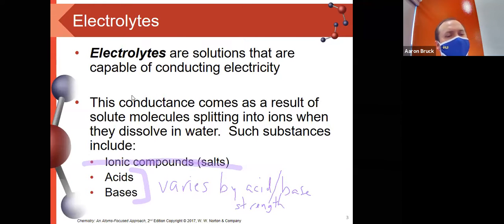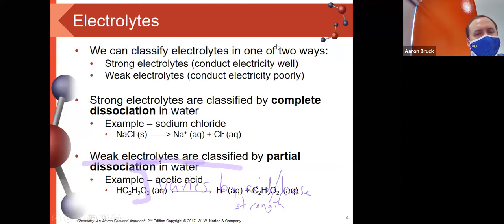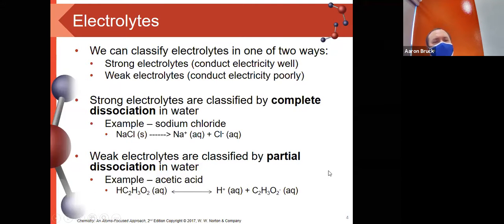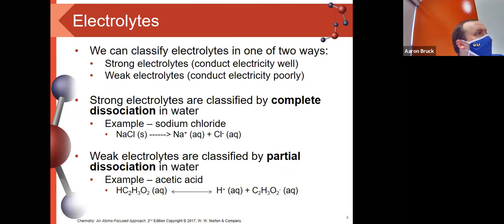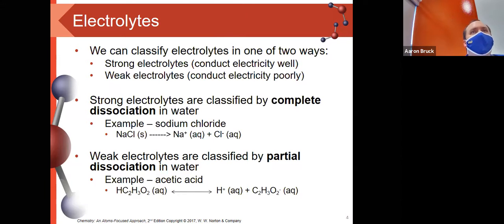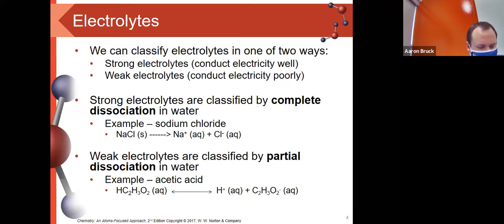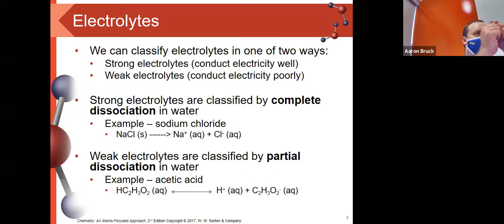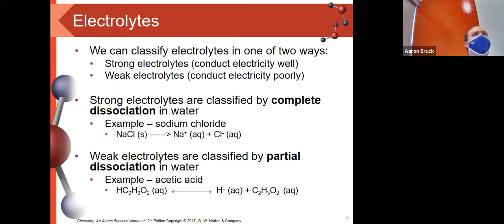For electrolytic character we're looking for ions. We can split electrolytic character into two different ways: there are strong electrolytes, which are substances that conduct electricity very well, and then there are weak electrolytes that do it more poorly. The difference between them is what we call dissociation — the water is going to pull apart the molecules, and the question is how much.